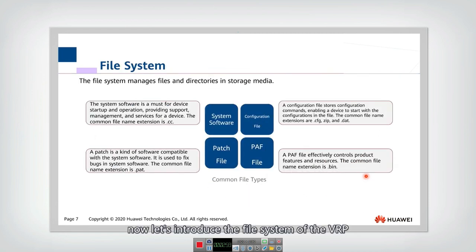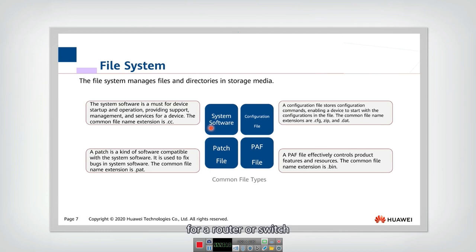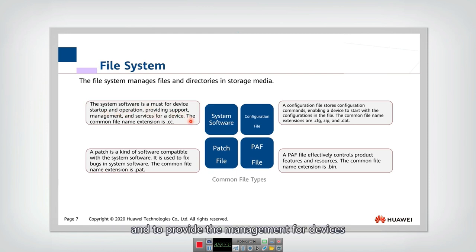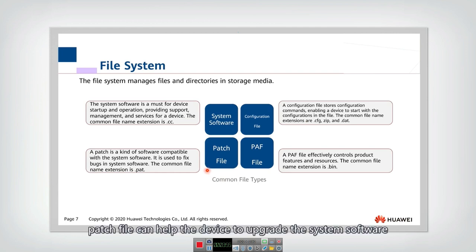Now let's introduce the file system of VRP. There are several different types of files. First, any device should have system software, much like the Windows or Linux system on a PC. For routers or switches, system software is a must for startup, operation, and device management. Second is the configuration file, which stores different device setups. Third is the patch file — you can think of it as an upgrade or update of the software that is compatible with the system software and can fix bugs or provide updates.